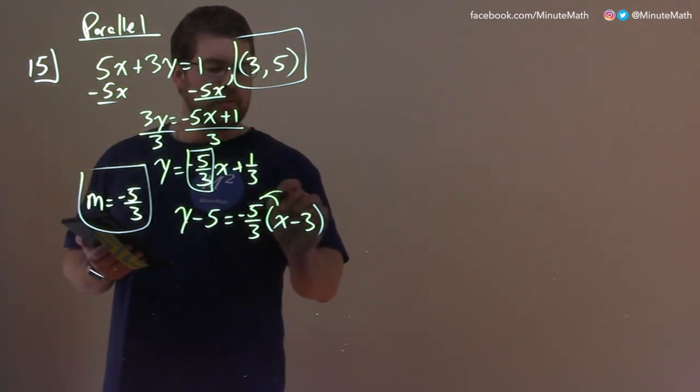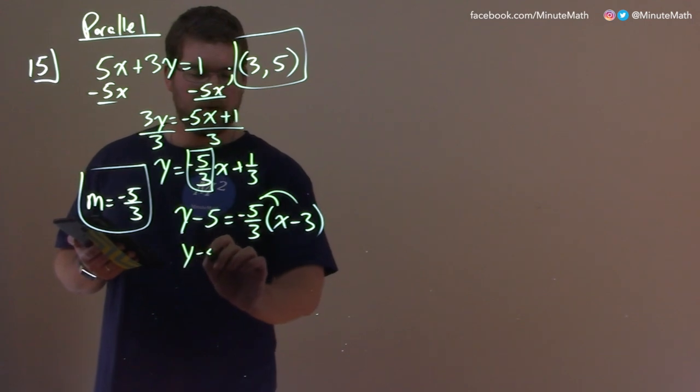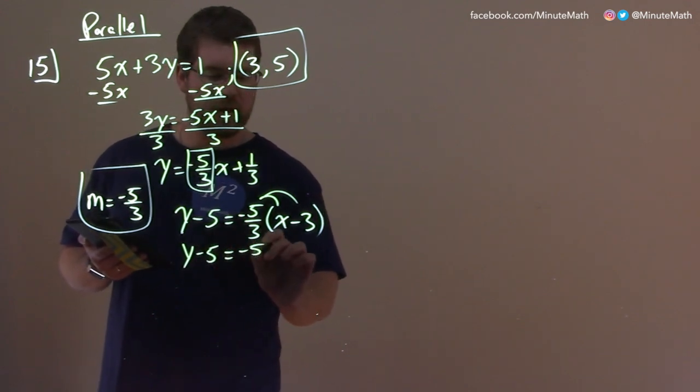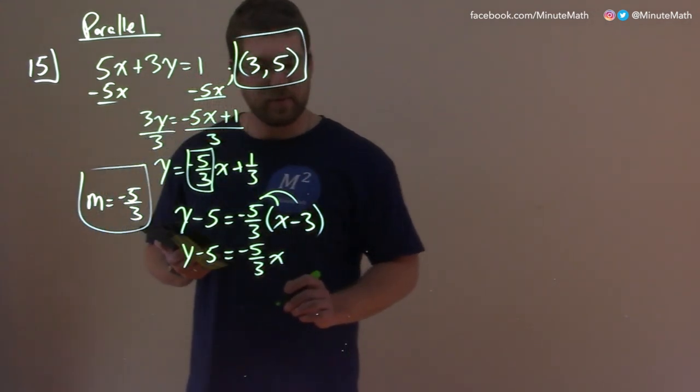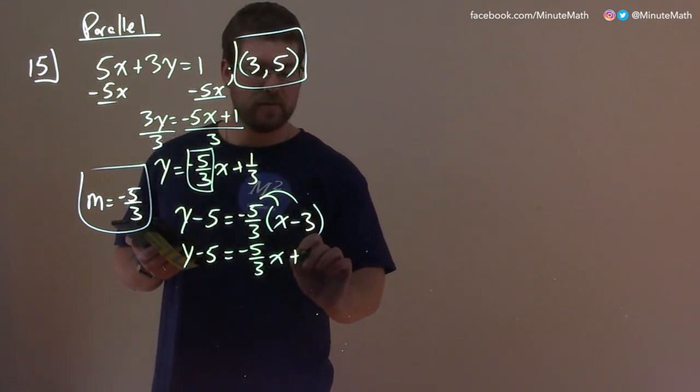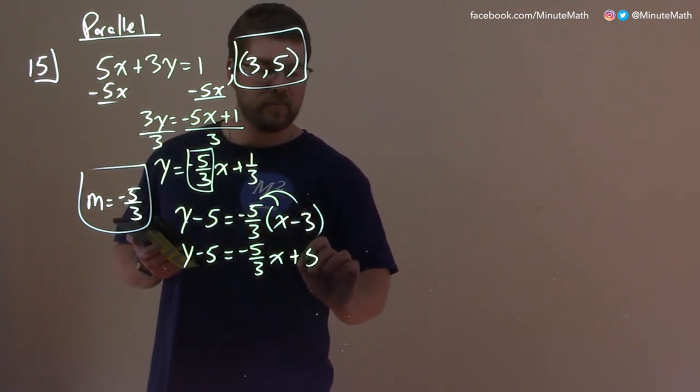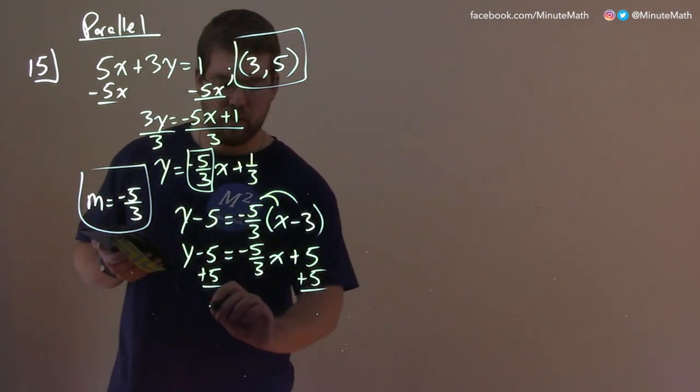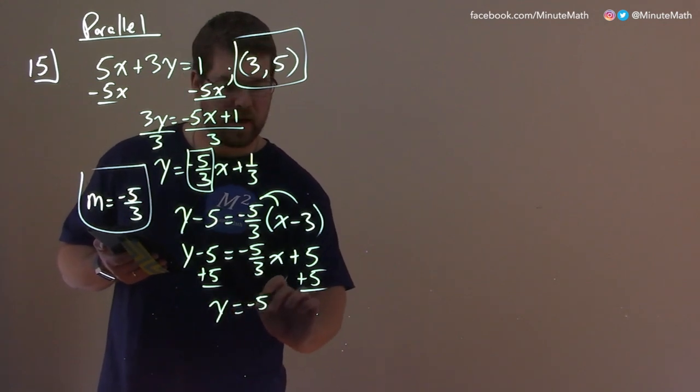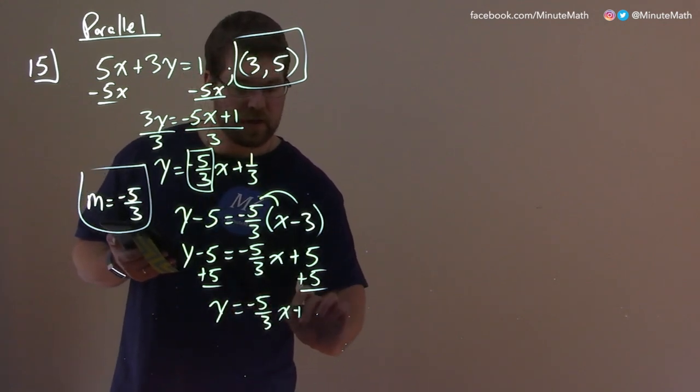So I'm going to distribute this negative 5 thirds out. y minus 5 equals negative 5 thirds x. Negative 5 thirds times a negative 3 is a positive. Two negatives make a positive, and that's just a positive 5. We then add a 5 to both sides, and this is a nice, easy problem.